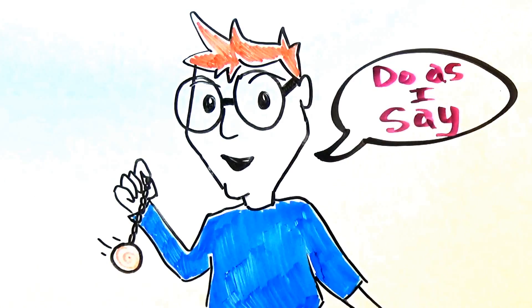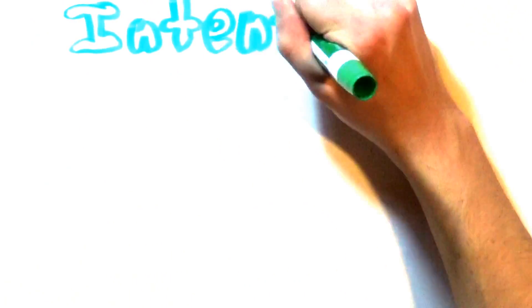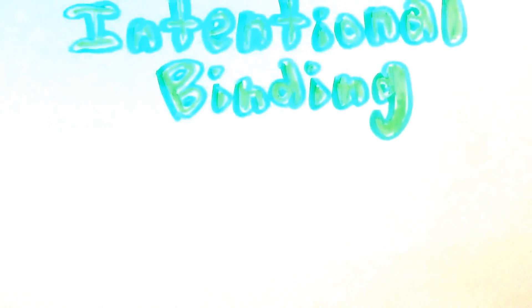Supporting the fact that some consciousness is lost during hypnosis is the intentional binding concept. Intentional binding has to do with estimating the amount of time between something voluntarily done and a sensory response which follows. For example, a button is pressed voluntarily and the sensory response which follows is a beep.